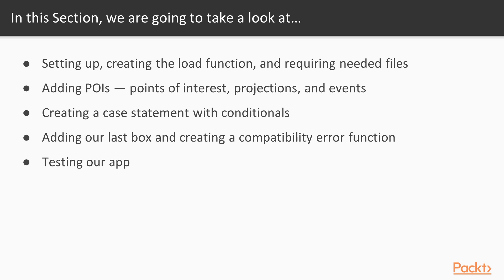Then we are going to move on to adding POIs — otherwise known as points of interest — projections, which are basically our objects, and then events. After that, we will be creating a case statement with certain conditionals which are going to control the events. Then we will be adding another box as part of our project, and we will be creating a compatibility error function.